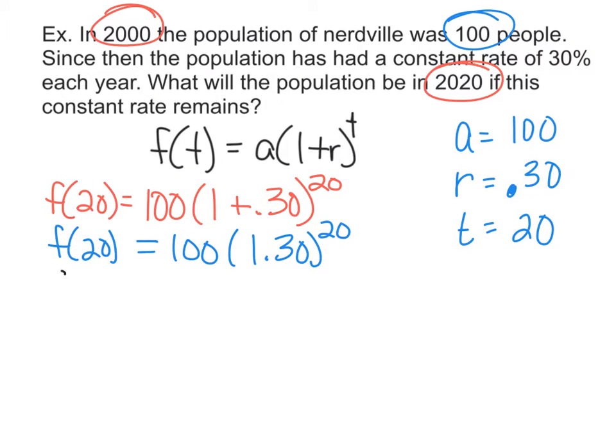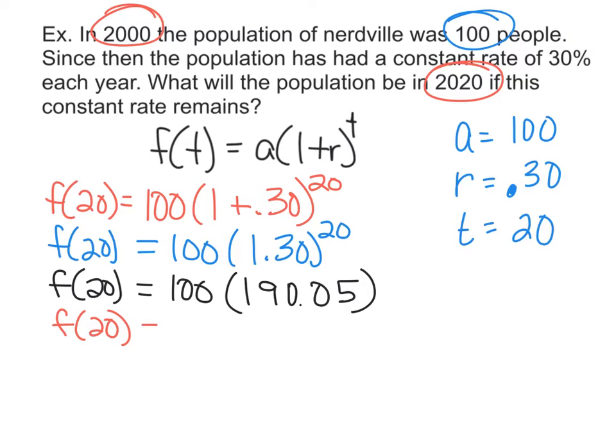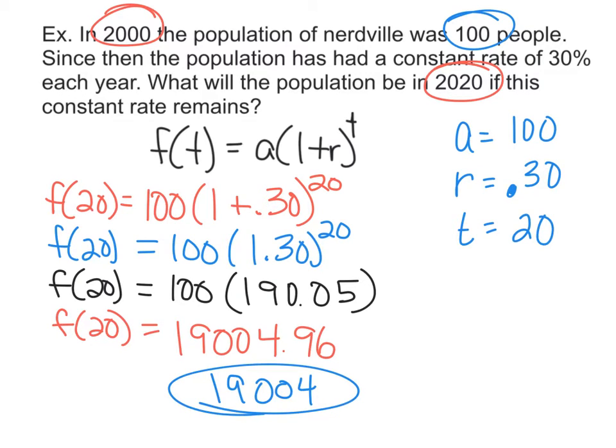You're going to need the calculator on this one, because my guess is you do not know what 1.3 raised to the 20 power is. I didn't know it either. So you're going to use your calculator. You're going to plug in 1.3 carat 20, and you get 190.05. And we can talk in class what that button looks like on our graphing calculators. And then you're just finishing up. Multiply those together, and you get this lovely number, 19,004.96. Now, since we're talking about people, our answer would simply be 19,004 people, because we can't cut a person. We need to cut the decimal out. That would be my final answer for the people. The population would be that number.